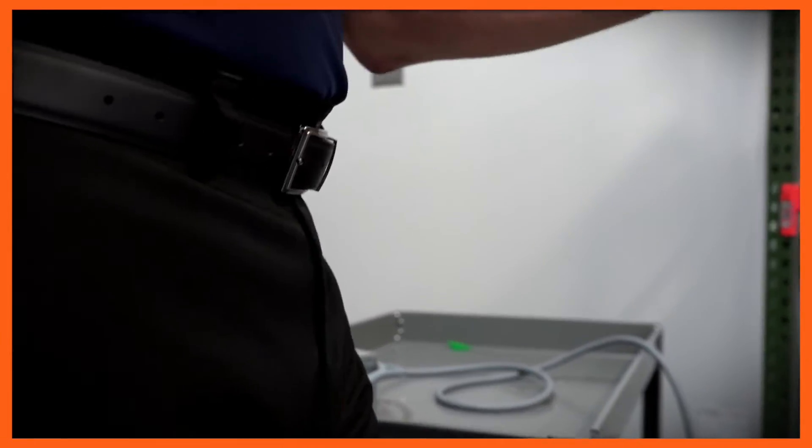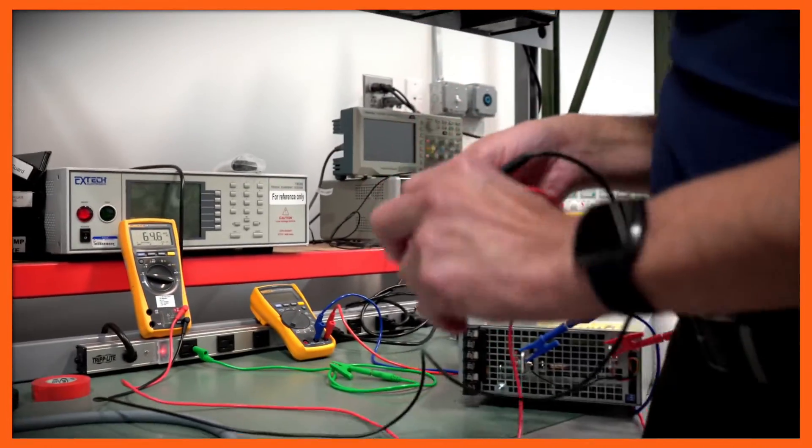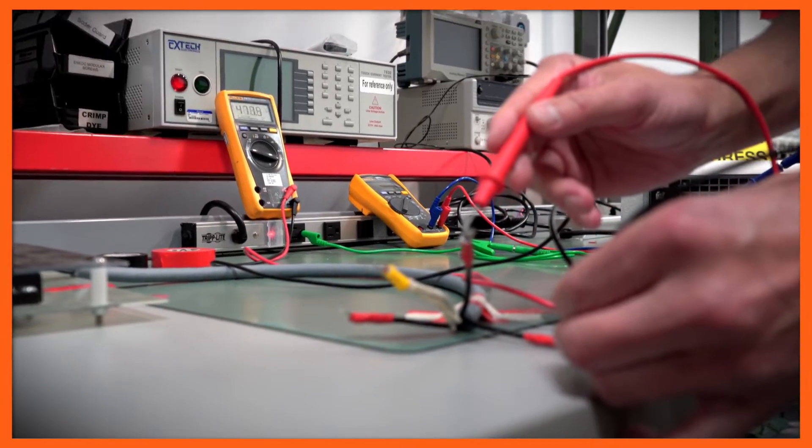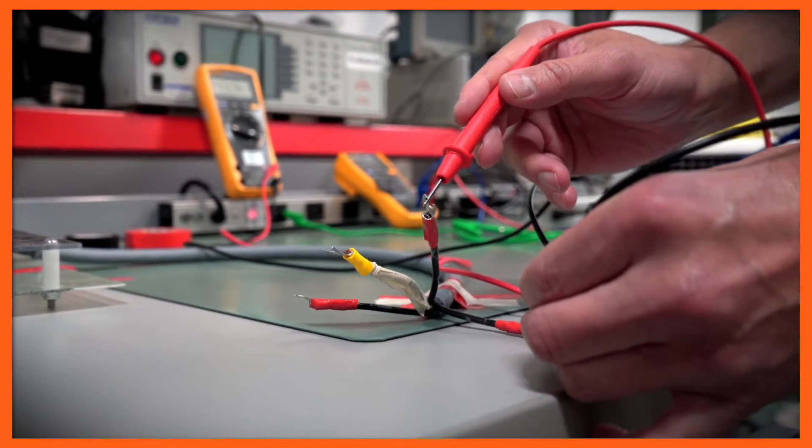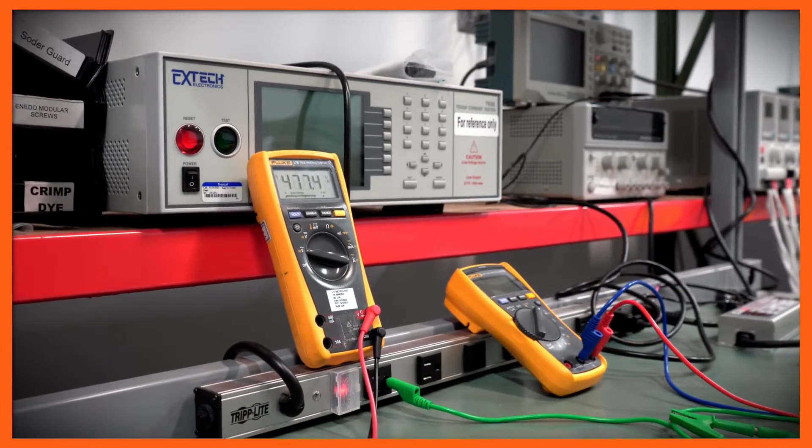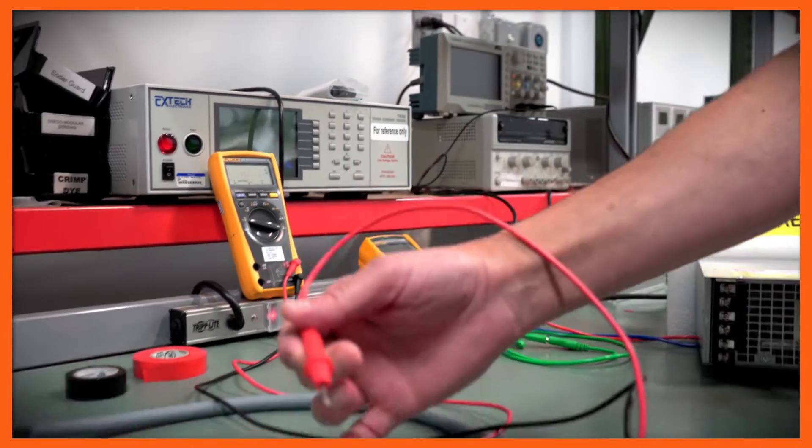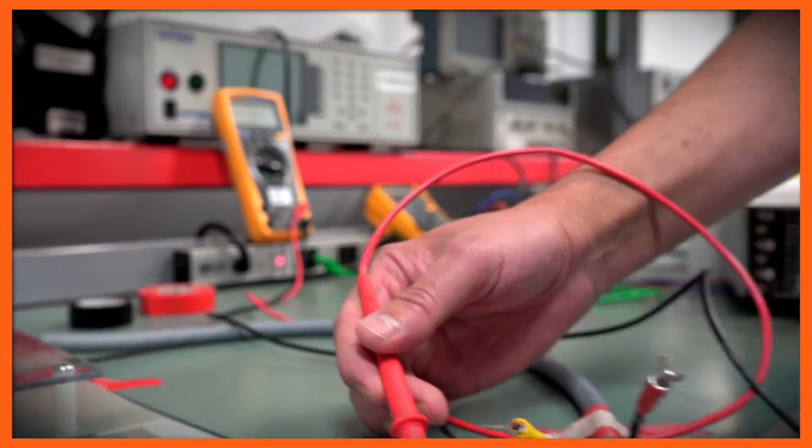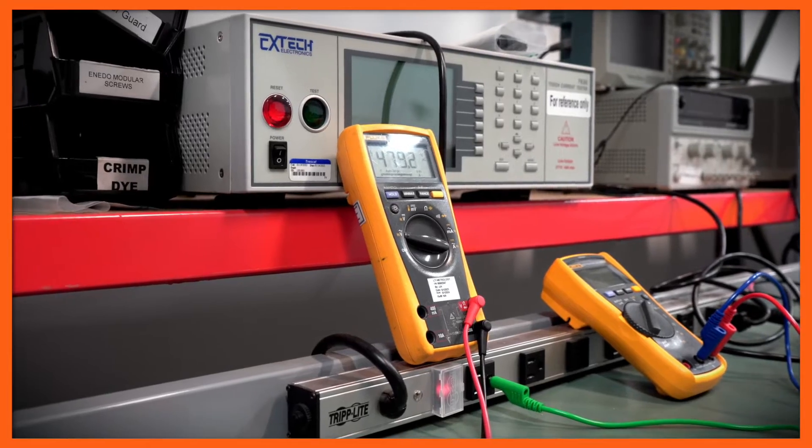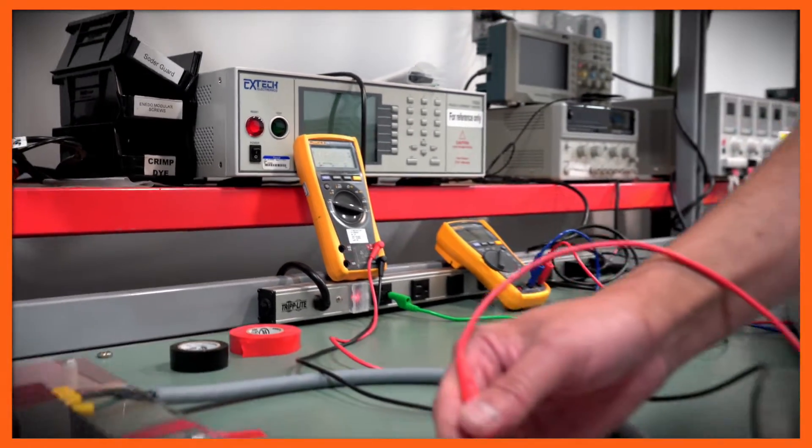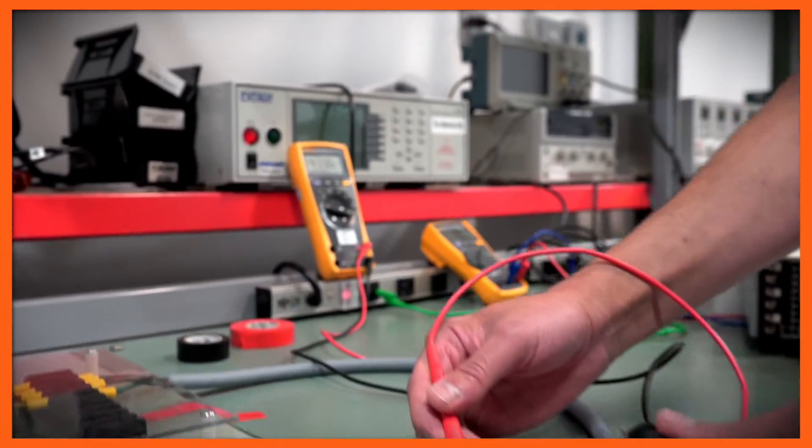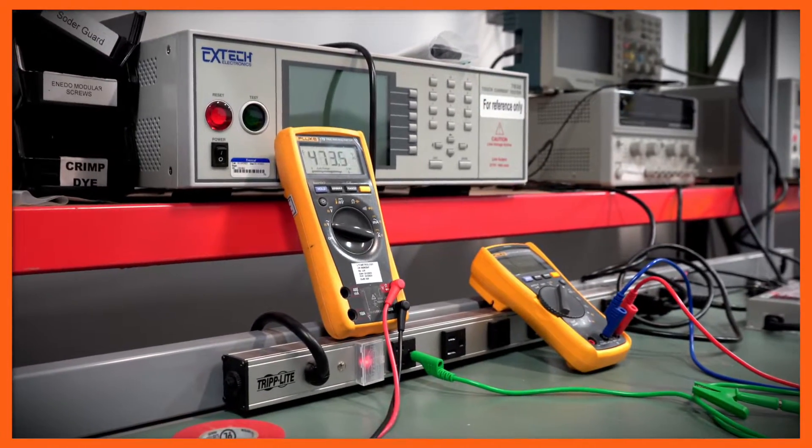Now I should have 480 volts live, so I'm going to be very careful measuring phase to phase. Taking my probe from one phase to the next, I'm measuring 477 volts. From another phase to another phase, I'm measuring 479, so close to 480. And one last phase to phase—473 volts, so we're very close to 480 on all phases.